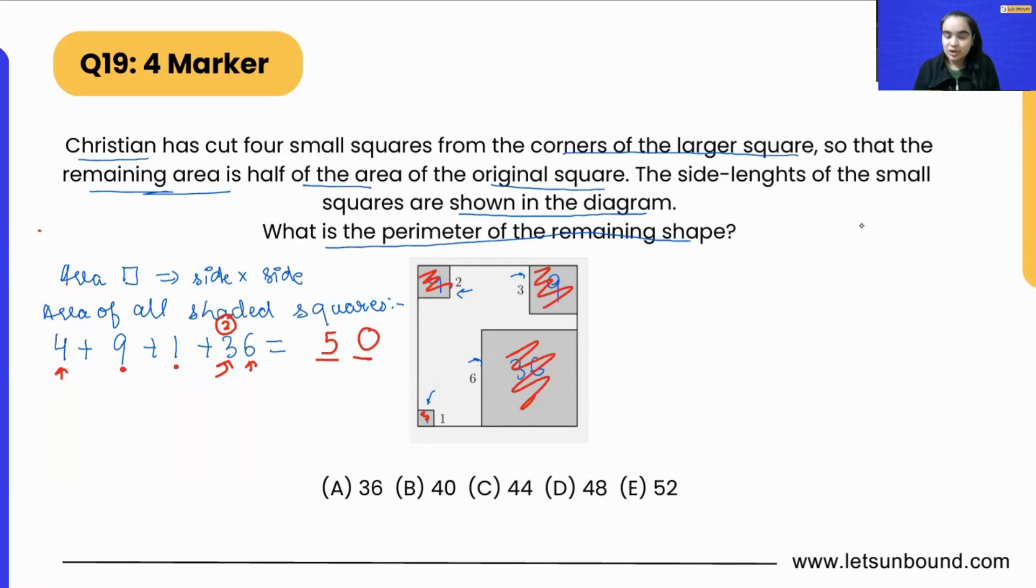Now the area of actual large complete square is going to be 50 plus 50, the double of it, or we can say 100 square units, because 50 times 2 or 50 plus 50 is 100. So we got the complete whole area as 100.